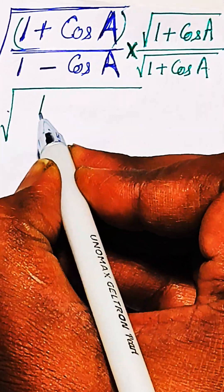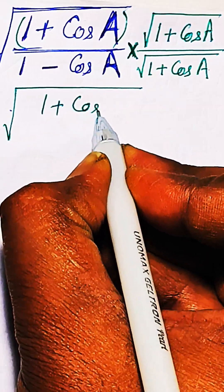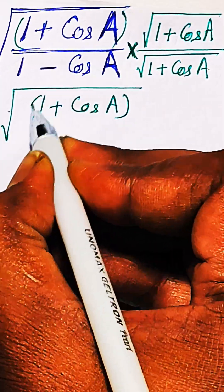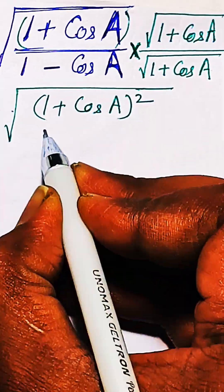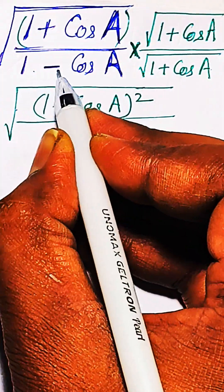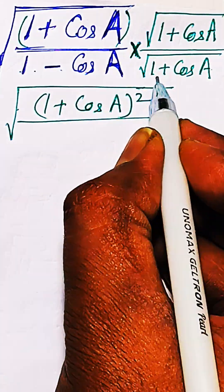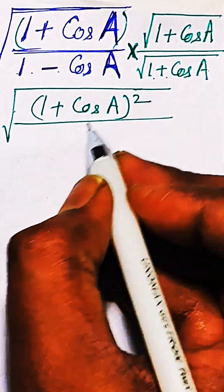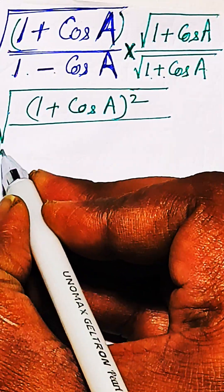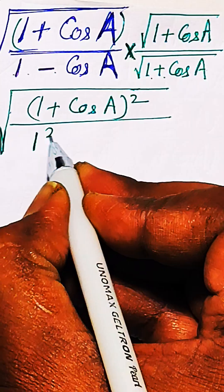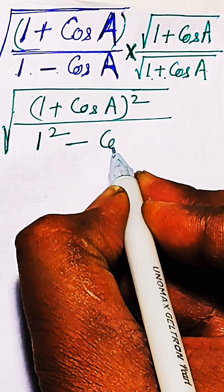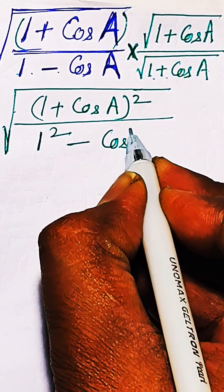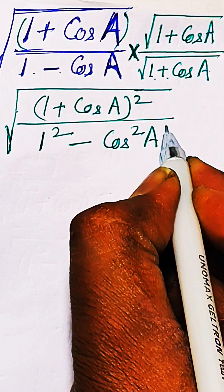This can be written as (1 + cos A)² in the numerator. And the denominator is in the form of (a - b)(a + b), that is a² - b². So the denominator can be written as 1² - cos² A.